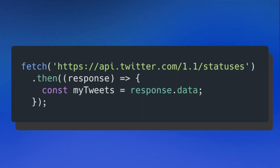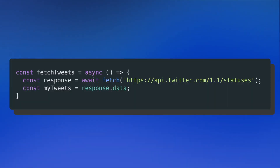Similar to my promise video, I want to show a real-world example — but using async and await instead of promises. I'm going to try to pull all my tweets from the Twitter API. The promise-based version uses fetch, then a then callback with response to get response.data. With async/await, I have an async function called fetchTweets. Inside, I create a constant called response using await on my fetch call — the code waits for the resolved data, and once it comes back, I assign response.data to my tweets. This feels much more natural since there are no multi-line callbacks; everything happens line by line on the same level.